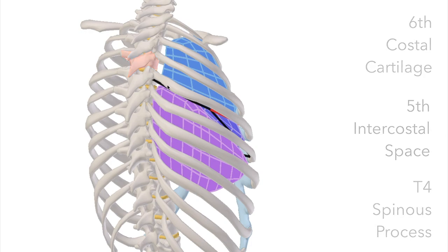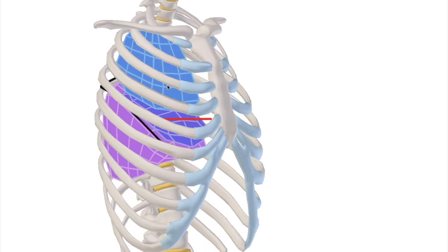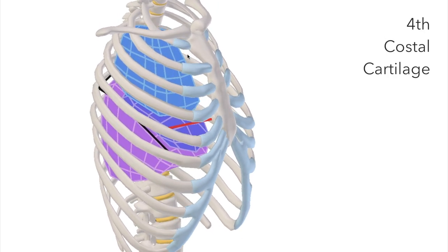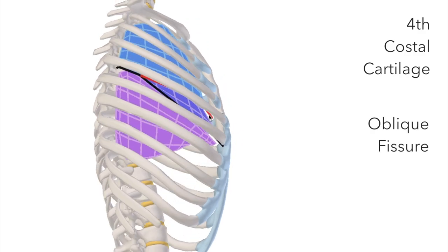Now for the horizontal fissure. That's supposed to start at the fourth costal cartilage, one, two, three, four, yep, and then it traces around to hit the oblique fissure.